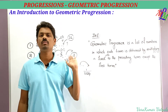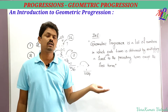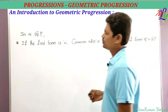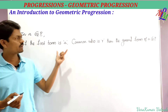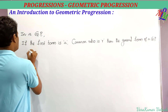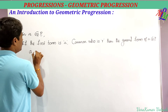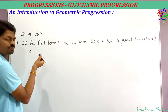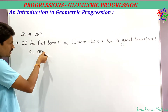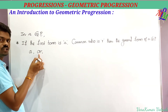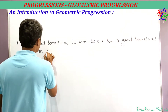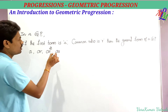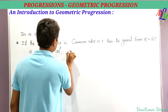In a GP, if the first term is 'a' and the common ratio is 'r', the general form is: a, ar, ar², ar³, and so on. The second term is a×r, the third term is ar×r = ar², the fourth term is ar²×r = ar³, and so on.